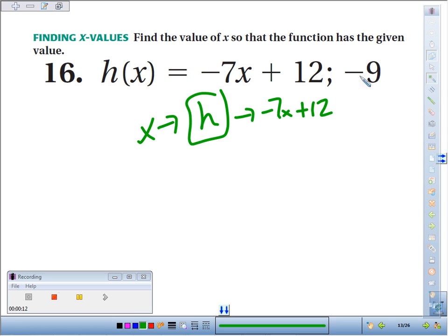They're not asking us to put negative 9 in for x. They're asking, what do you plug into the function for x? So what do I plug in for x so that this function kicks out negative 9?